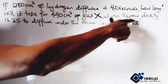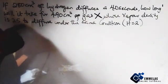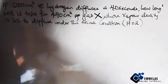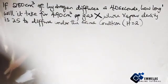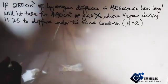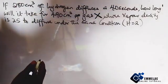gas X which vapor density is 25 to diffuse under the same condition. We know from Graham's law